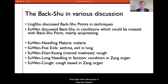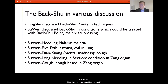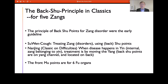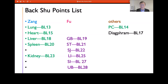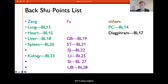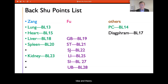There are various discussions in the Internal Classic about the techniques for stimulating the back Shu point and how to use them in different situations. The principle that back Shu points are primarily for Zang organs rather than Fu organs has been further discussed in several parts. On the left side, those in green color are the back Shu points of the five Zang organs — they are at the center of the back Shu point idea and theory.